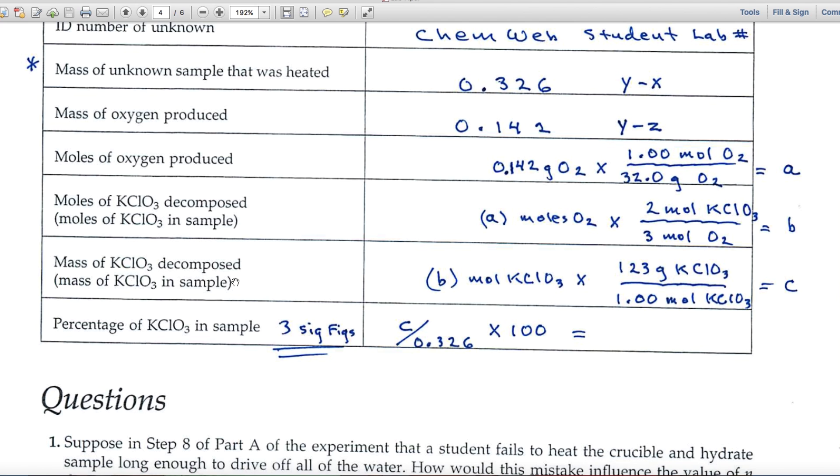The next calculation uses the factor unit method. We want to go from moles of KClO3 to grams of KClO3. We use this number B in moles, multiply by grams over moles. That'll give us C. We're just about there, because we're going to use C now to calculate the percentage of KClO3 in the sample. We want three significant figures, that's what we have above. So C over our beginning mass, that 0.326. It's the part over the total times 100. That's the formula for percent, expressed in three significant figures.